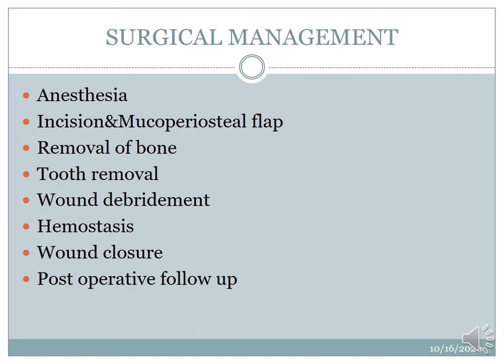After preoperative evaluation of the radiograph and planning for surgical removal, the following steps are done: local anesthesia is preferred for third molar removal. After anesthesia is given, an incision is made with a number 15 BP blade. When the mucoperiosteal flap is raised, the amount of bone covering is removed. Then the tooth is removed, tooth splitting is done if needed, wound debridement performed, hemostasis achieved, wound closure done, followed by postoperative follow-up.